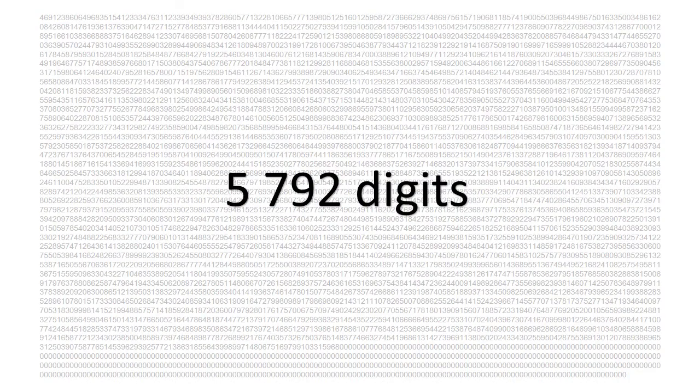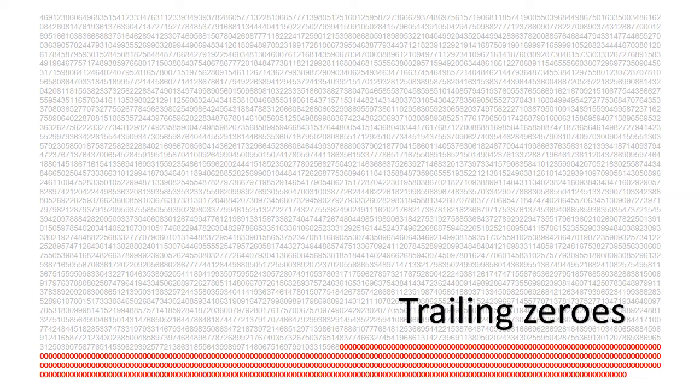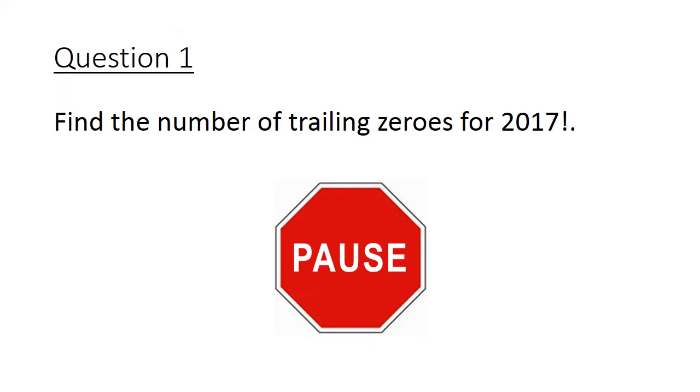The actual number comes up to 5792 digits, and there's this huge chunk of trailing zeros attached to it that I've highlighted in red. So the question is how many of them are there? I'm going to ask you to pause this video here to think through the problem before you view the solution.